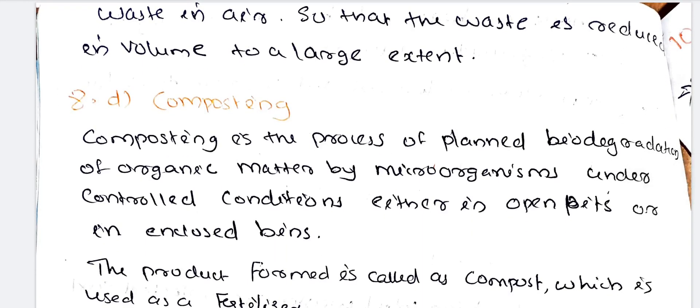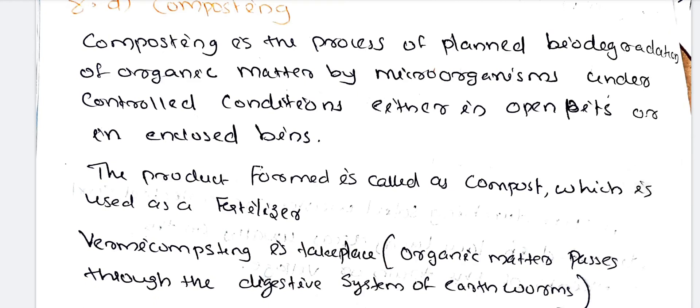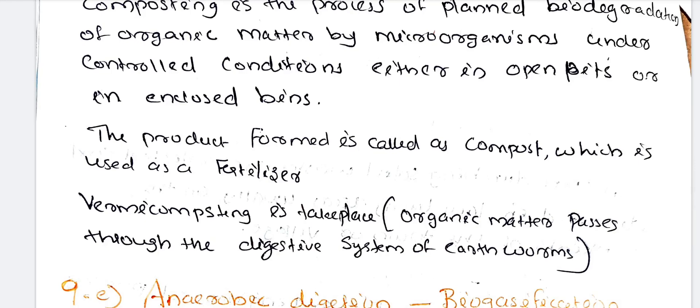Next method: composting. Composting is the process of planned biodegradation of organic matter by microorganisms under controlled conditions, either in open pits or in enclosed bins. The product formed is called compost, which can be used as a fertilizer. Degradation occurs and the product is then used as fertilizer.